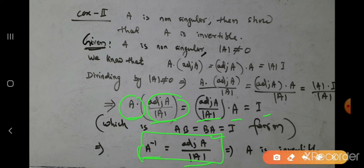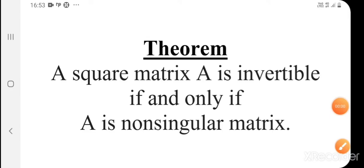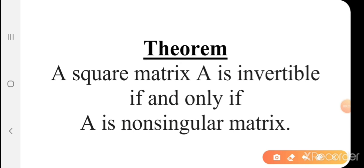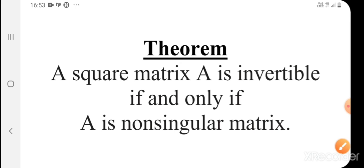Therefore A is an invertible matrix. Hence we have proved the theorem: a square matrix A is invertible if and only if A is a non-singular matrix. Thank you. Please subscribe my channel, which will help you in the coming CBSE Board Examination.